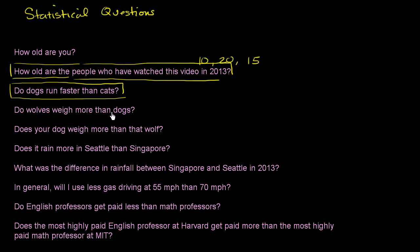Do wolves weigh more than dogs? There are some very light dogs and some very heavy wolves, so those wolves definitely weigh more than those dogs, but there are also some very heavy dogs. Because we have variability in each of these, you'd want to find some central tendency — the median wolf weight or the mean wolf weight — and compare that to the mean dog weight. Since we're speaking in general about wolves and dogs and there's variation in the data, this is definitely a statistical question.